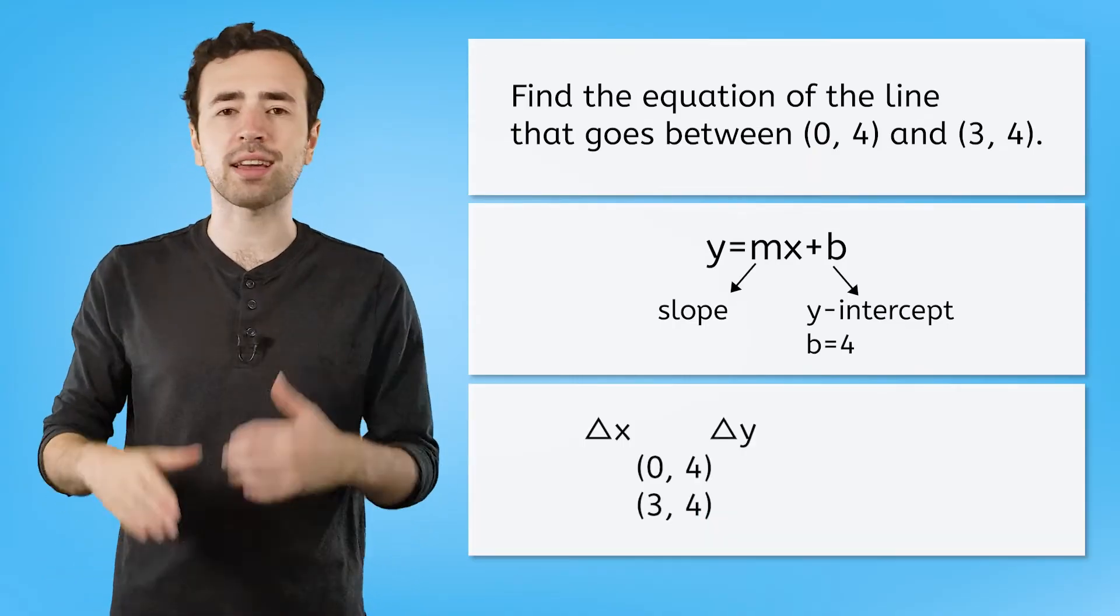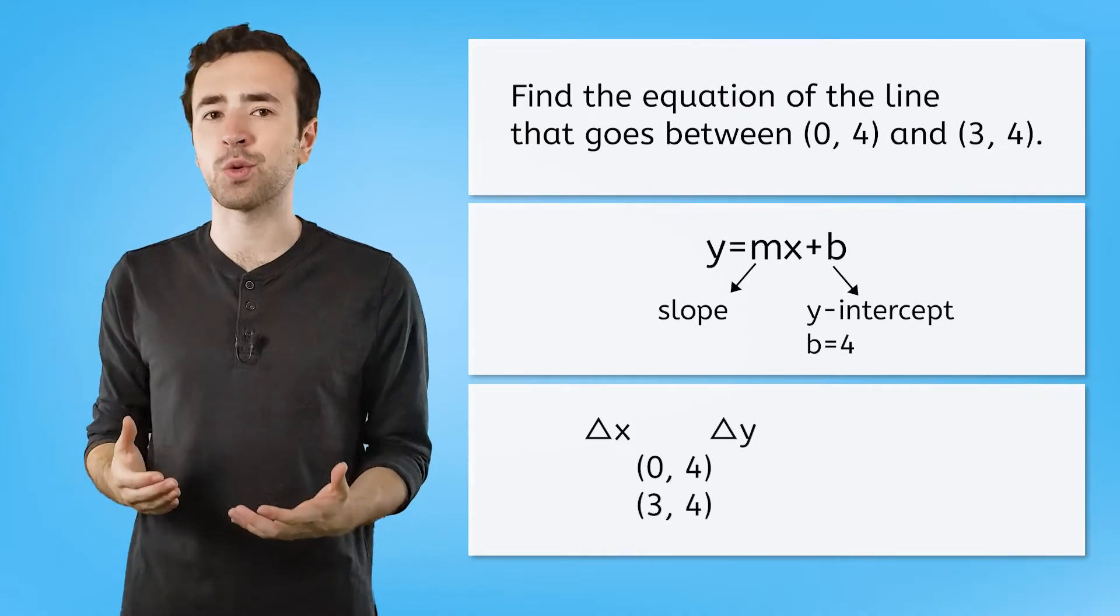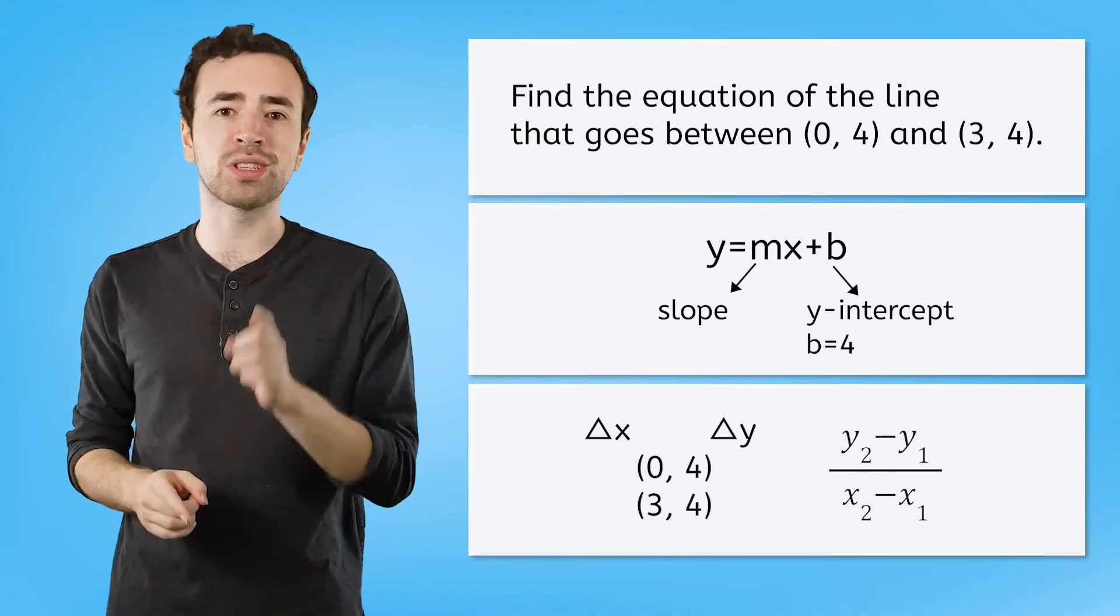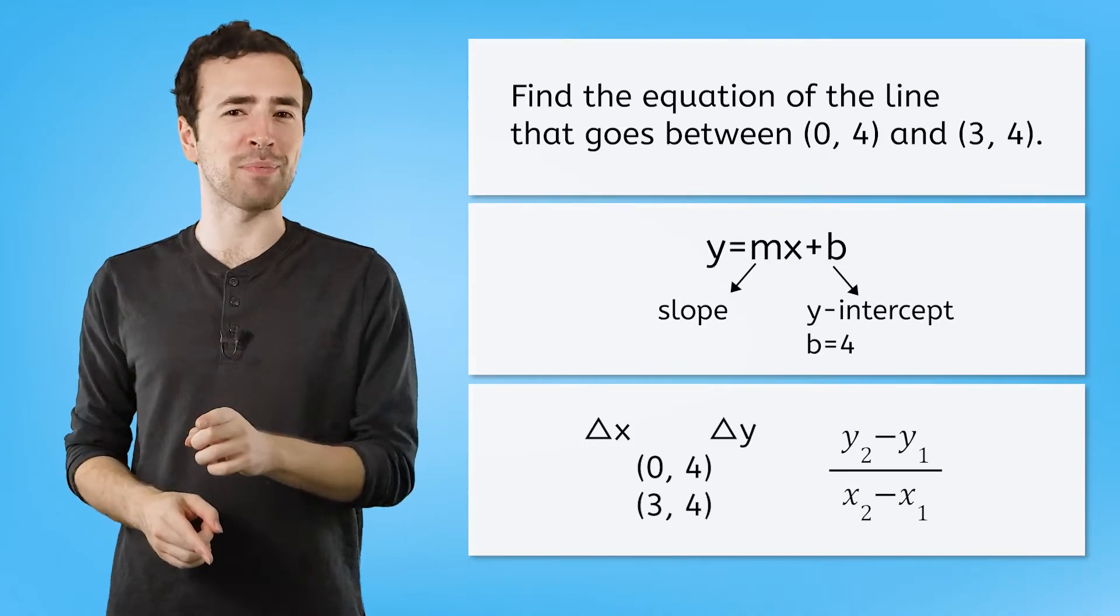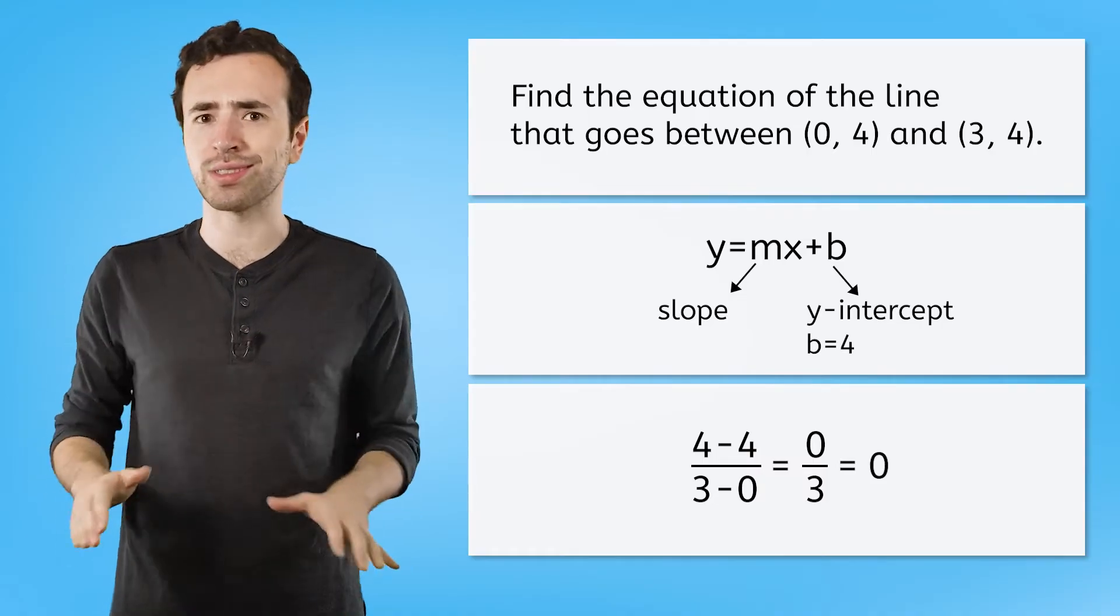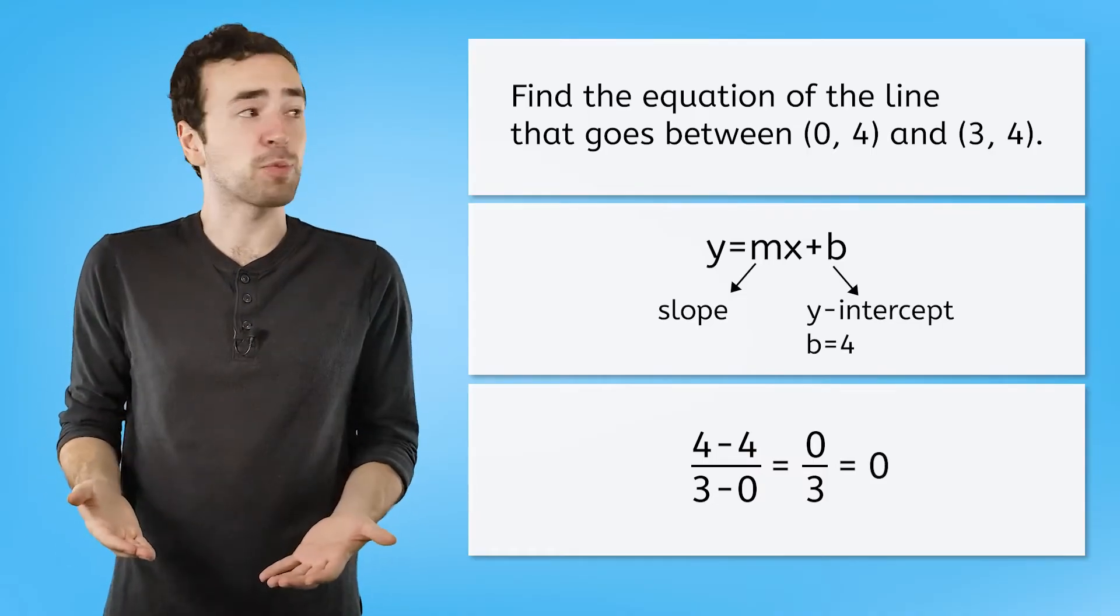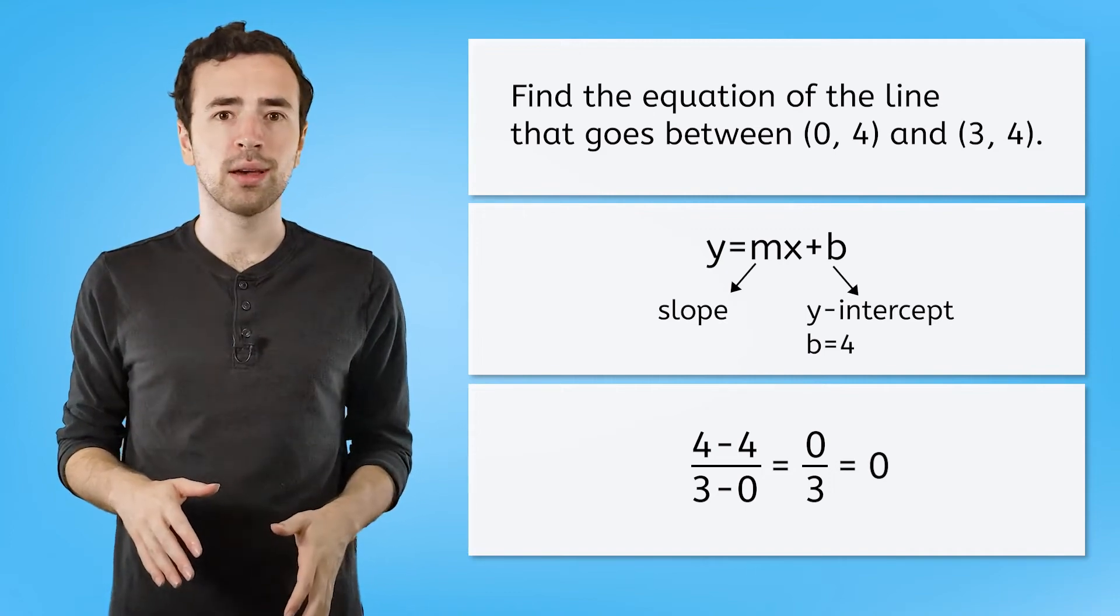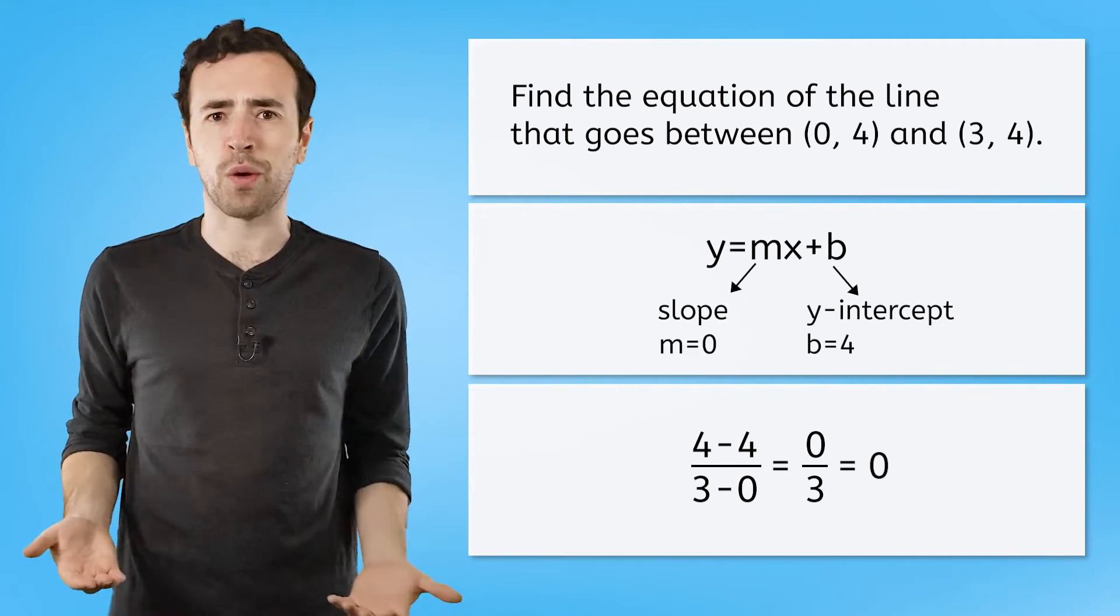You could stack your points and find the change in x and y, or use the slope formula. But no matter which method you choose, something strange should have happened. Did you get that your slope is 0 over 3, or just 0? It makes sense because the y-coordinate doesn't change at all between these two points.